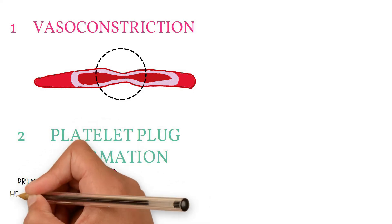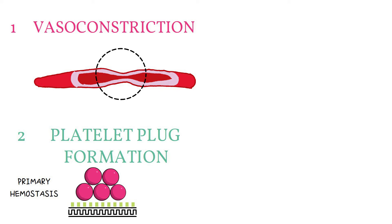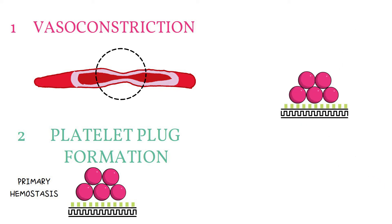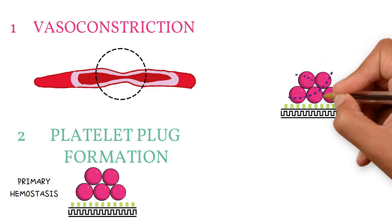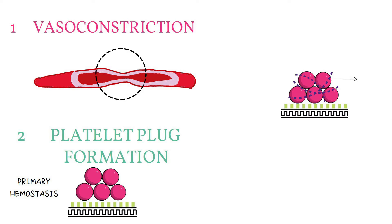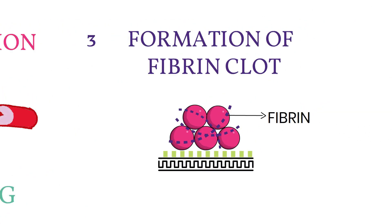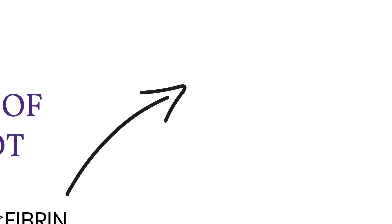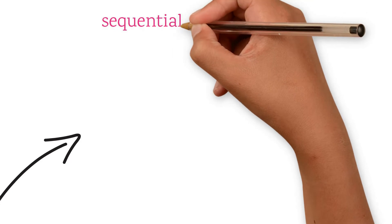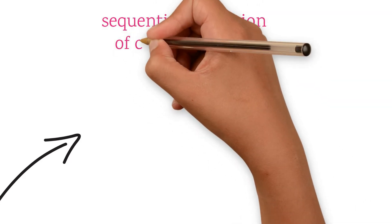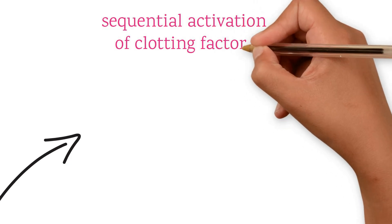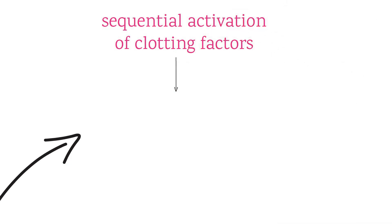Primary hemostasis is a short-lived, rapid response, so in the case of major hemorrhage the platelet plug must be reinforced by fibrin strands. The third step is therefore the formation of a fibrin clot. This fibrin is formed through the coagulation pathway — the sequential activation of clotting factors — which results in formation of a substance called thrombin, and thrombin converts fibrinogen to fibrin.